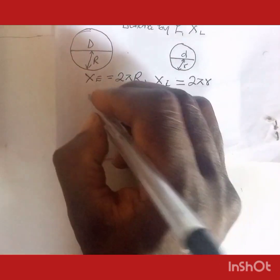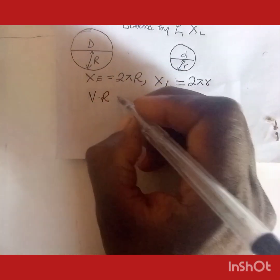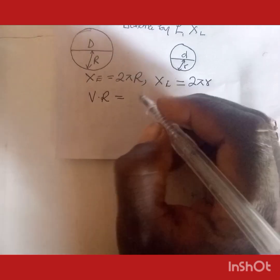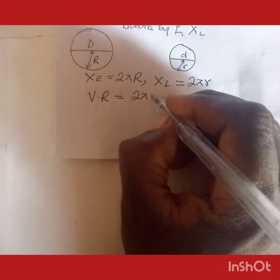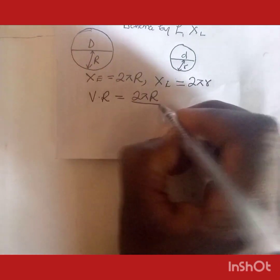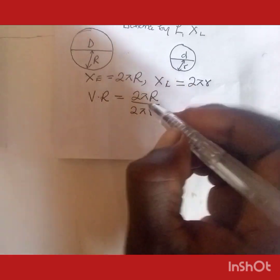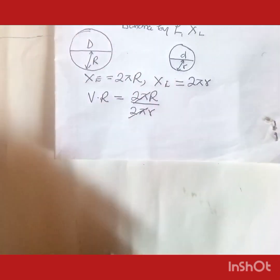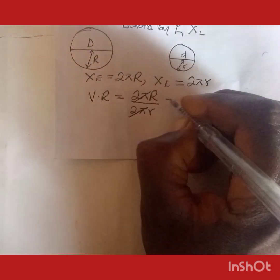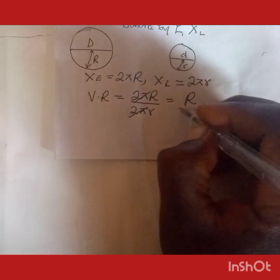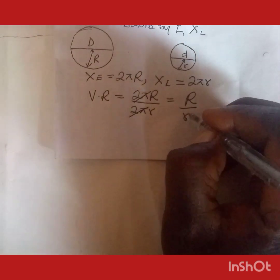So the velocity ratio of the wheel and axle system equals 2πR over 2πr. The 2π cancels out, and we're left with capital R over lowercase r.